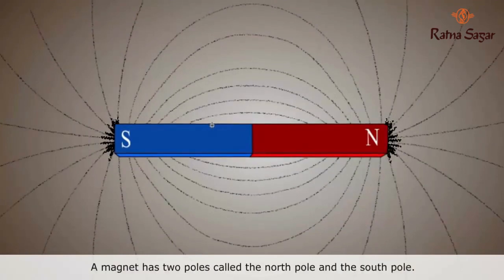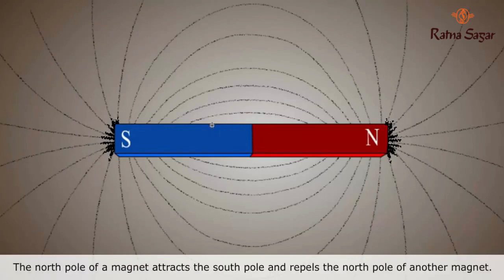A magnet has two poles called the North Pole and the South Pole. The North Pole of a magnet attracts the South Pole and repels the North Pole of another magnet.